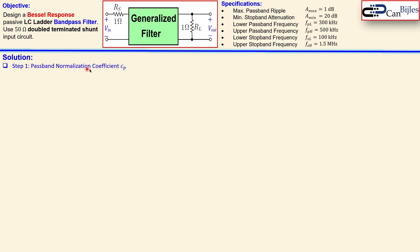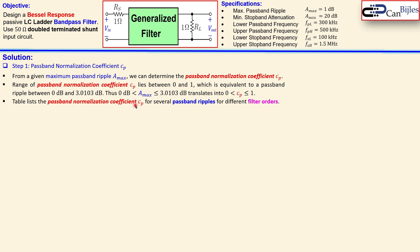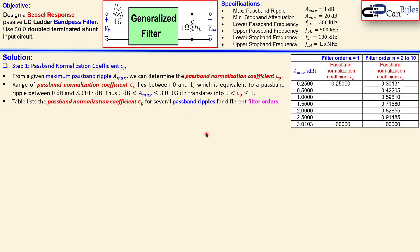The first step is the passband normalization coefficient cp, as we did in the previous videos for our Bessel response design. For a given maximum passband ripple a-max of 1dB, you translate that to the normalized passband coefficient cp, which lies between 0 and 1, corresponding to a-max between 0dB and 3.01303dB. There is a table that lists cp values for a specific passband ripple and filter order.